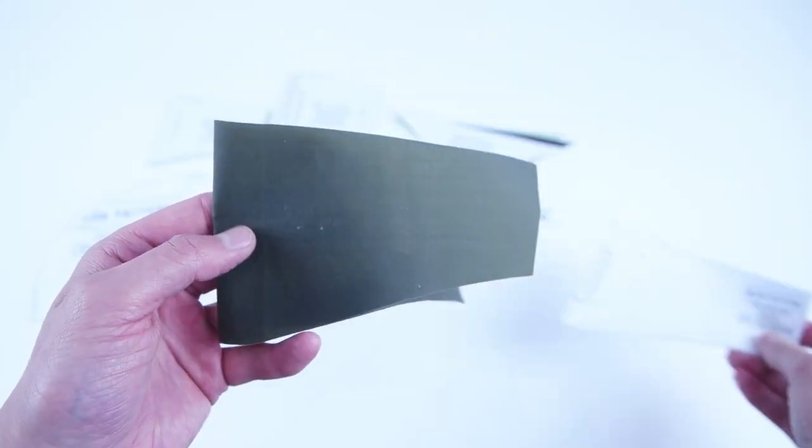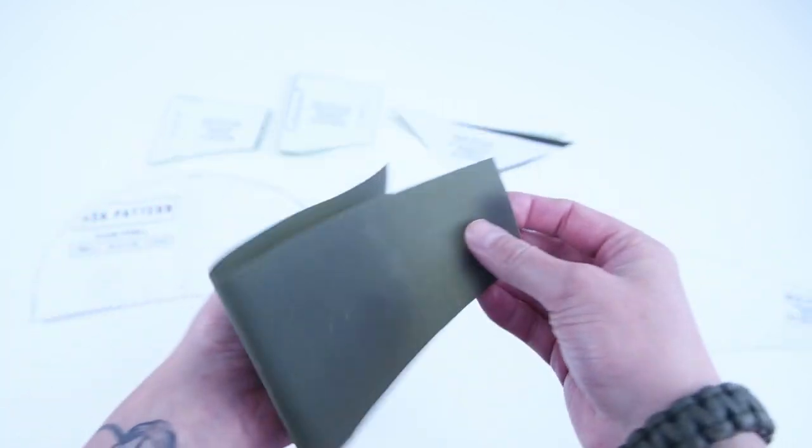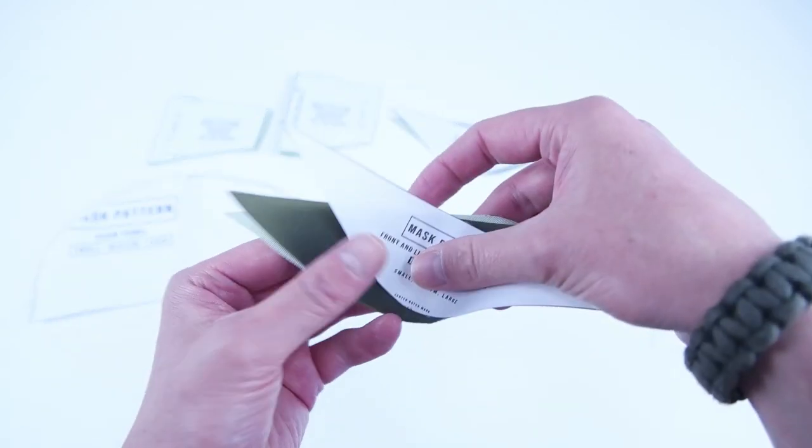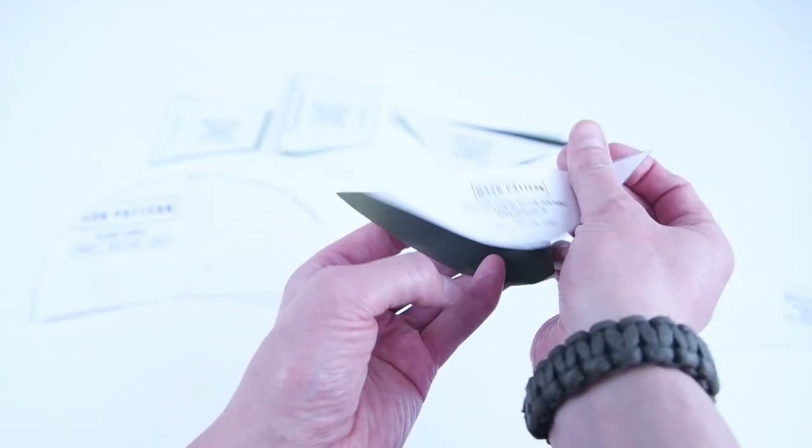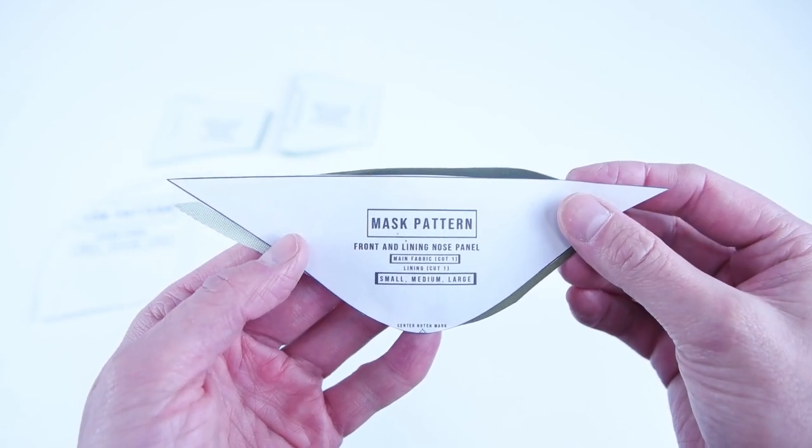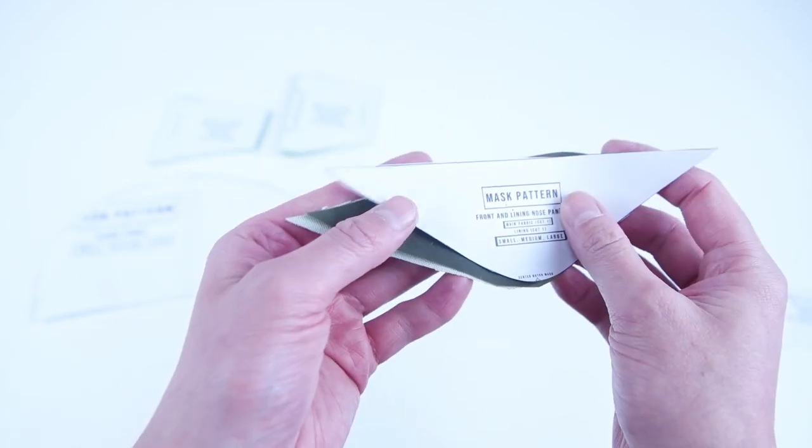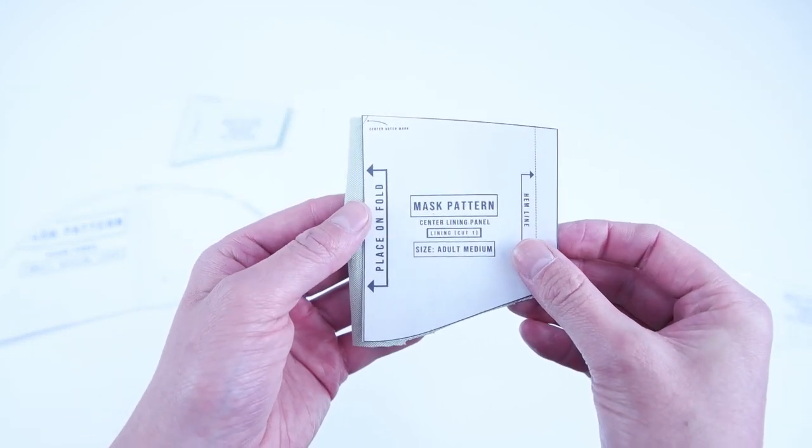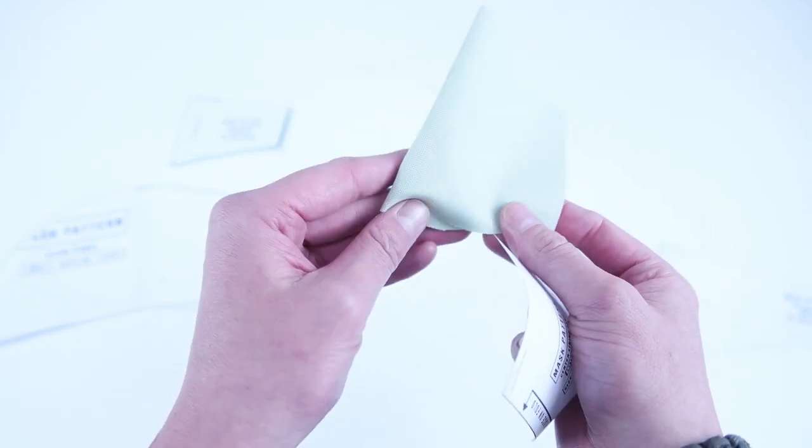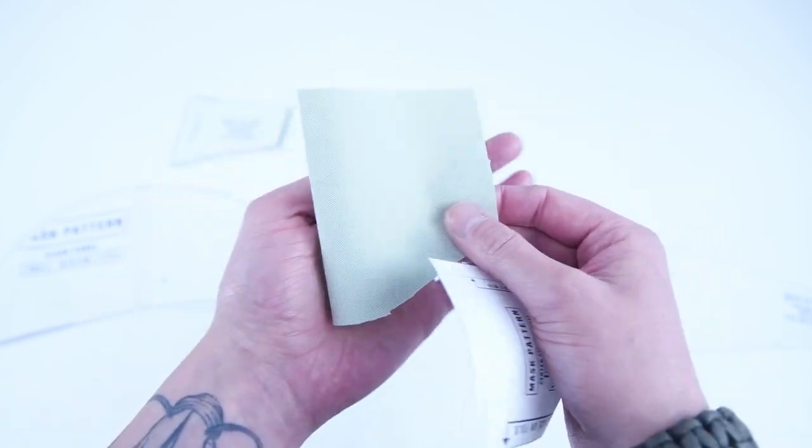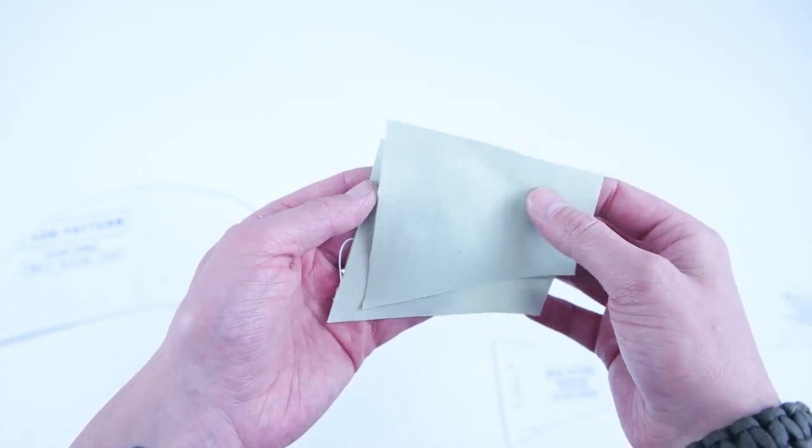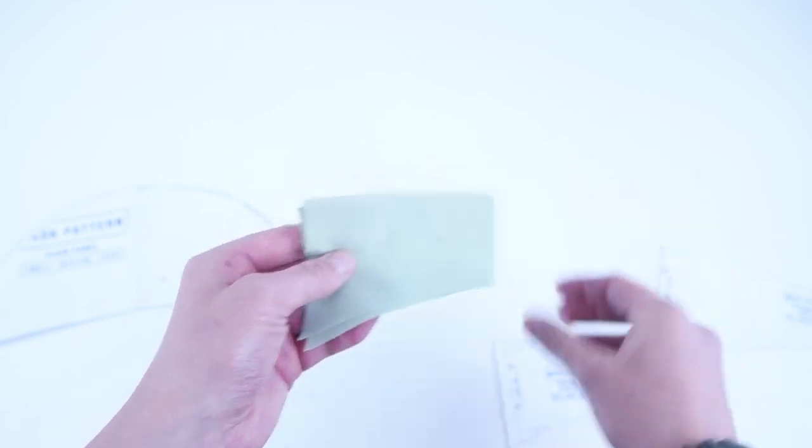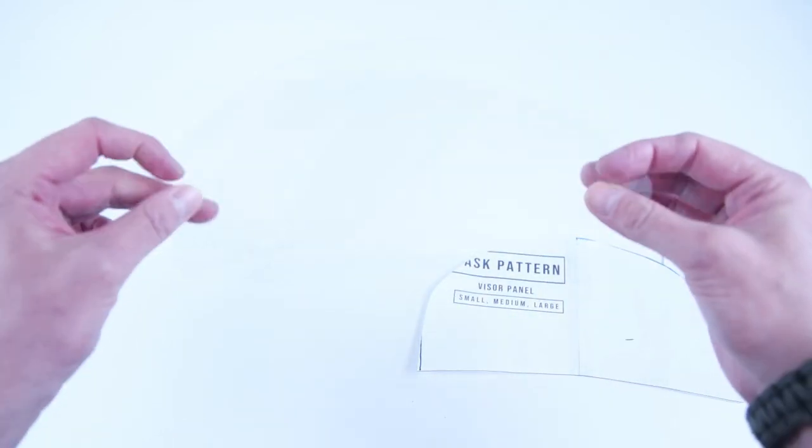After cutting you're going to want to end up with one main panel cut on the fold, two bottom chin panels, one out of your outer layer and one out of your lining, two nose panels, one out of your outer layer and one out of your lining, one center lining panel, also cut on the fold, two lining side panels and one visor panel if you choose to add the visor to your mask.